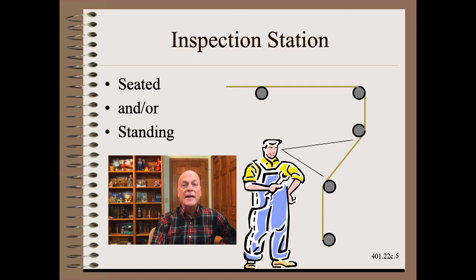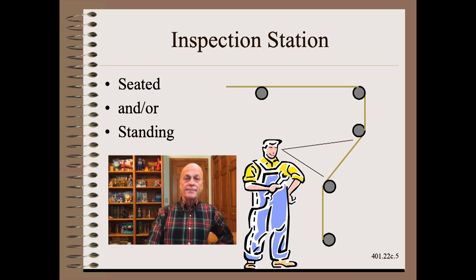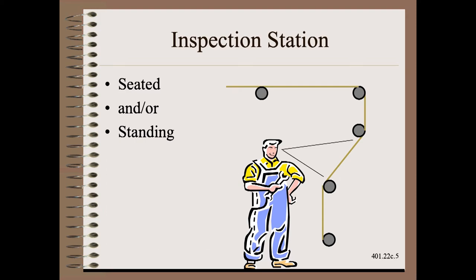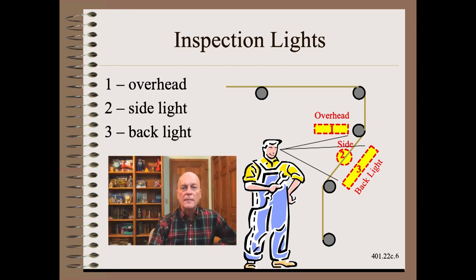Let's start designing our inspection station. The first thing we need to do is find a position that is most comfortable for an operator to work in, whether seated or standing. Ergonomically, the best direction to look is straight ahead or slightly down. Now let's add our lovely soft, controlled, and color-balanced lighting. In this case, we will add three light sources, though you may wish to have slightly more or less depending on the application.